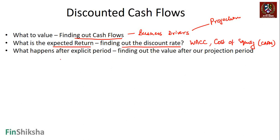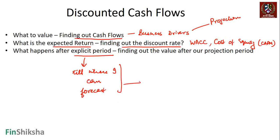The third aspect is what happens after the explicit period — the period for which I can forecast, whether that's three, five, or seven years. After this explicit projection period, the method typically used is a stable growth assumption — we assume the company is approaching steady-state growth and will grow at a certain rate and not beyond.